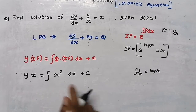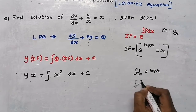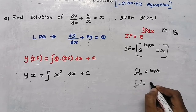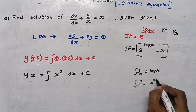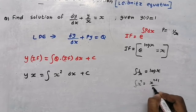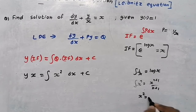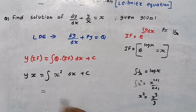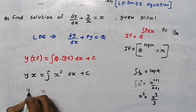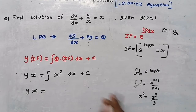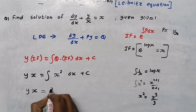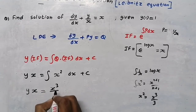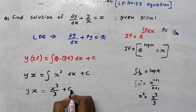Using the power rule, ∫x^n dx = x^(n+1)/(n+1), so ∫x² dx = x³/3. Therefore: y × x = x³/3 + C.